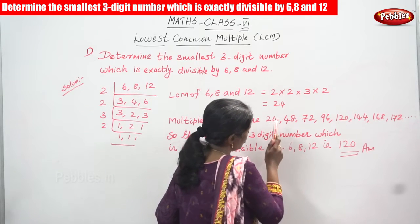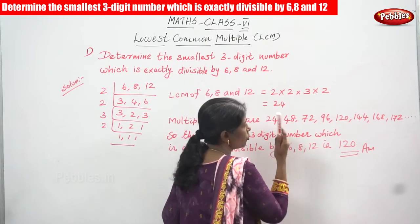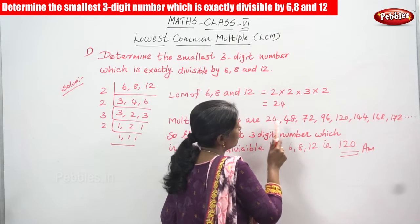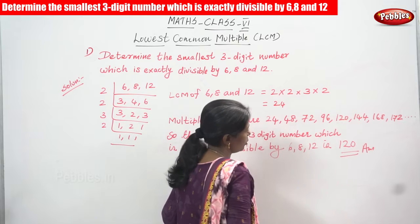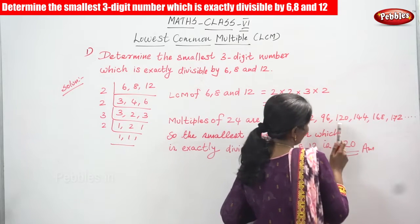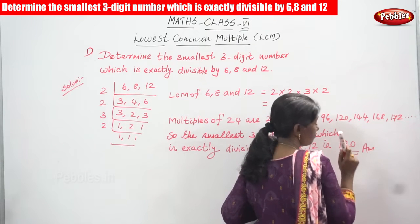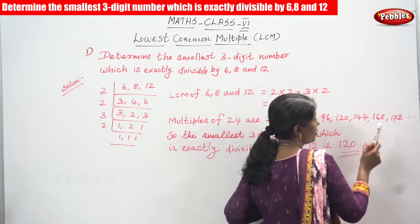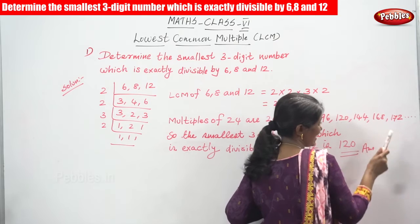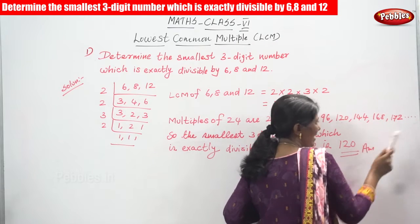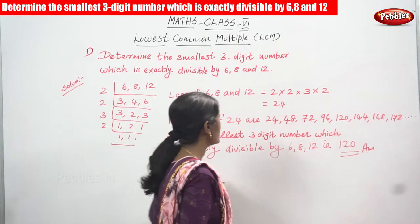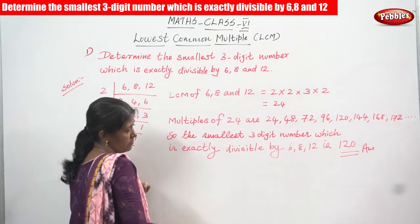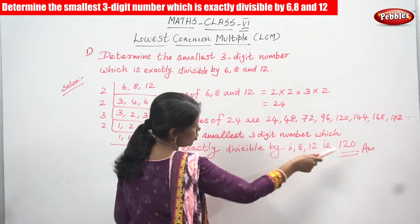Multiples of 24: 24 × 1 = 24, 24 × 2 = 48, 24 × 3 = 72, 24 × 4 = 96, 24 × 5 = 120, 24 × 6 = 144, 24 × 7 = 168, 24 × 8 = 192, and so on.